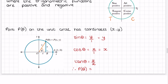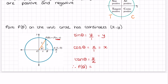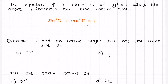From our coordinates x and y, we've found that sin θ equals y and cos θ equals x. So the point on a unit circle must be (cos θ, sin θ). The equation of a circle is x² + y² = 1, so using that information it becomes sin²θ + cos²θ = 1.